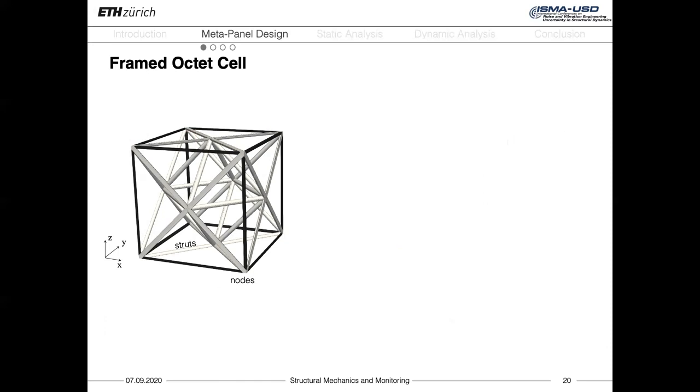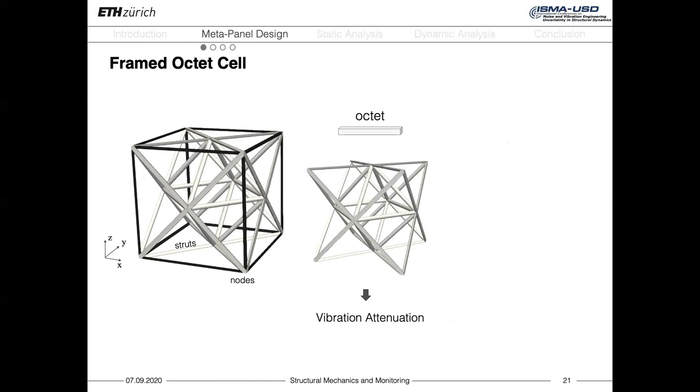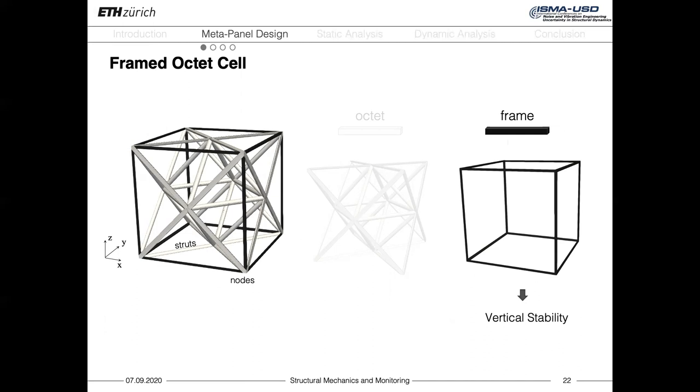The final constituent cell of the panel is a modified version of the octet lattice, where we add an external frame to the basic unit. The internal part consists of a simple octet, which has the only function of ensuring vibration attenuation. And this internal part is enclosed in an external simple cubic frame, which provides vertical stability to the structure and allows larger flexibility in terms of material and geometrical choice. Hence, we designed the two constituent parts of the cell in a way that they fulfill different functions, one for the vibration attenuation and the other for the vertical stability.